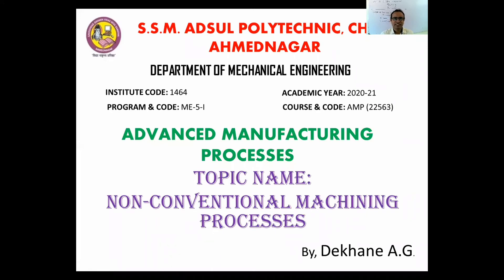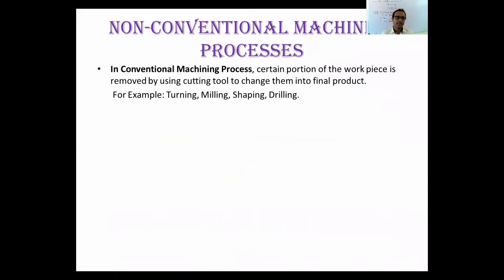Let us start non-conventional machining processes. In conventional machining, some portion of a workpiece is removed by using a cutting tool to change it into its final form. For example, in a lathe machine, we use a hard cutting tool to remove material from a part with the help of that cutting tool, changing it into the final work. That is nothing but the conventional machining process, also called traditional machining processes.